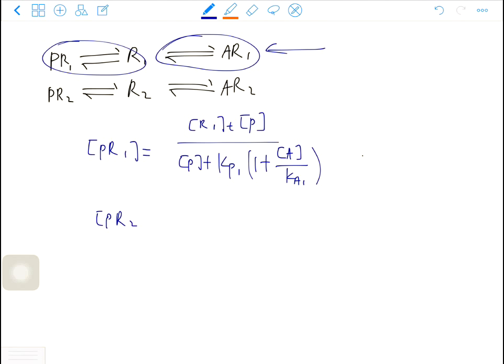The total binding, which is the observed binding, is the specific binding of PR1 plus the specific binding of PR2, and plus the non-specific binding, which is the constant times the concentration of the probe. Because there are two types of receptors.